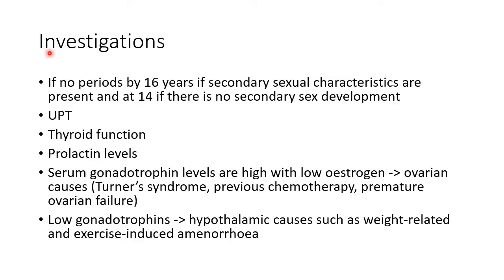Now let us see about the investigations done for primary amenorrhea. Investigations should be done if a girl has no periods by 16 years of age with secondary sexual characteristics present, or at 14 years of age if she has not developed any secondary sexual characteristics. Urine pregnancy test should be done to rule out pregnancy. Thyroid function test should be done. Prolactin levels should be estimated to rule out prolactinoma. Serum gonadotropin levels are high with low estrogen in ovarian causes such as Turner syndrome, previous chemotherapy, and premature ovarian failure. Gonadotropins are low in hypothalamic causes like weight-related and exercise-induced amenorrhea.